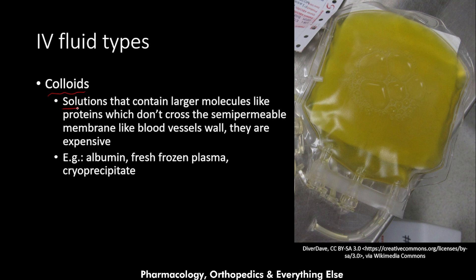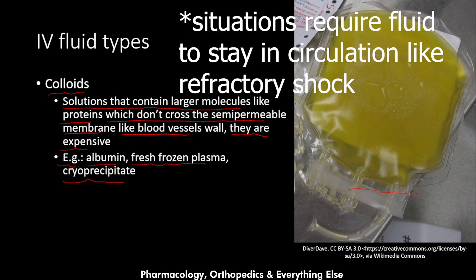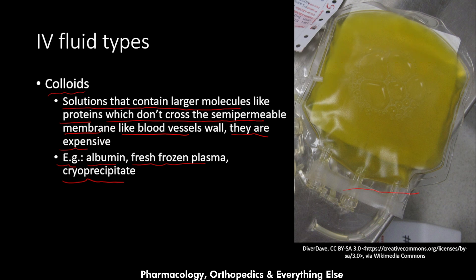On the other hand, colloids are solutions that contain larger molecules like proteins, which don't cross semipermeable membranes like the blood vessel walls. They are expensive. Examples include albumin, fresh frozen plasma, and cryoprecipitate. Here we have the fresh frozen plasma shown in this picture. The key difference is that colloids stay in the intravascular space and don't cross outside the vessels as much as crystalloids do, making them superior in supplying fluids during conditions that require fluid to stay inside the circulation.